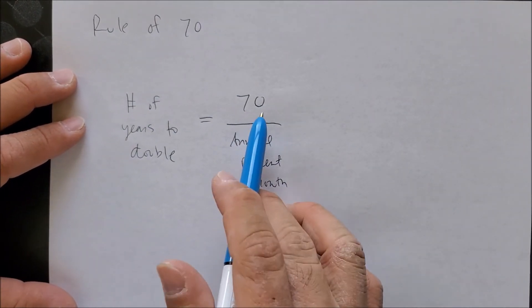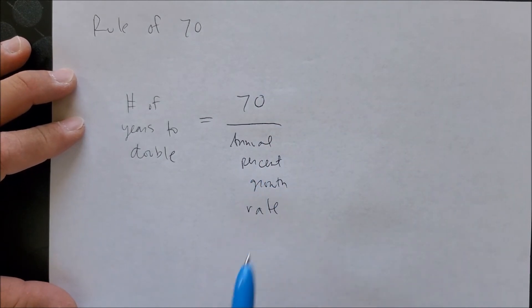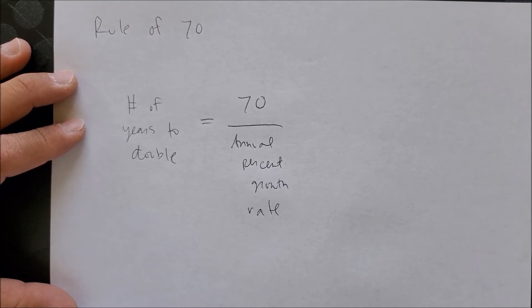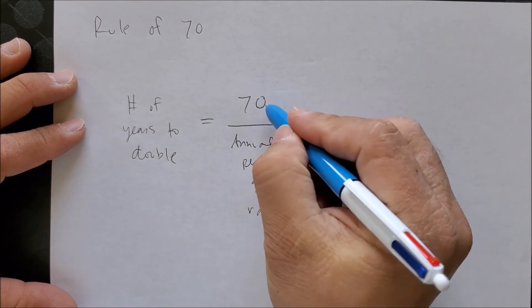Now this 70 comes from the future value formula. If you were to rearrange that formula, you should be able to get something called ln 2, known as the natural log of 2, and that's about 69 point something. Hence we kind of just round up and say 70, which gives us this number 70 on the numerator.